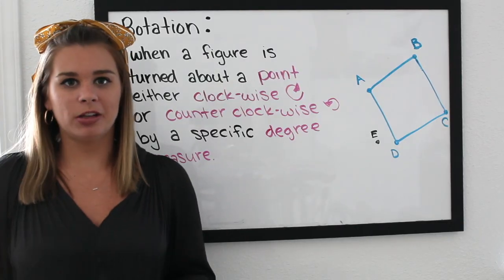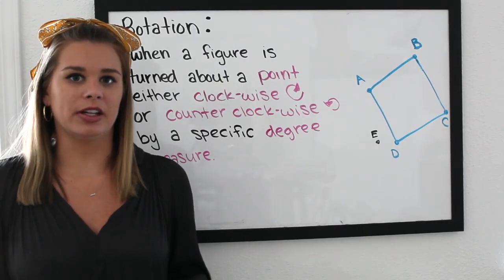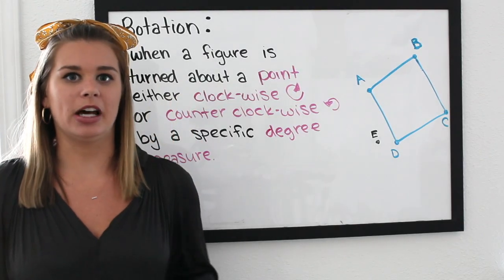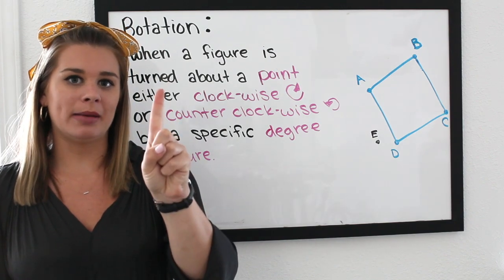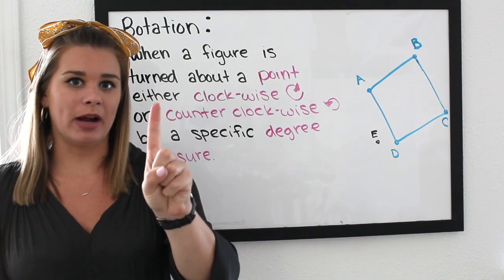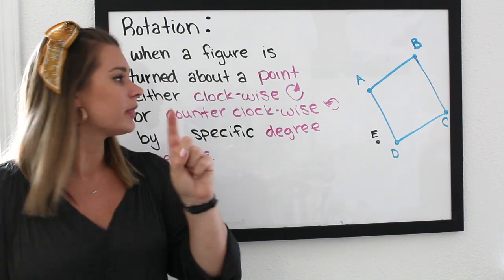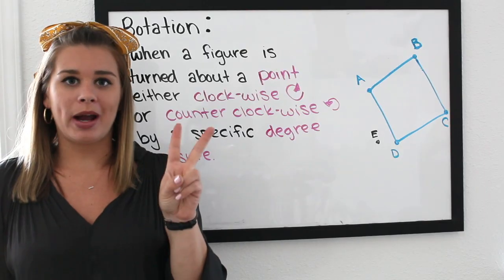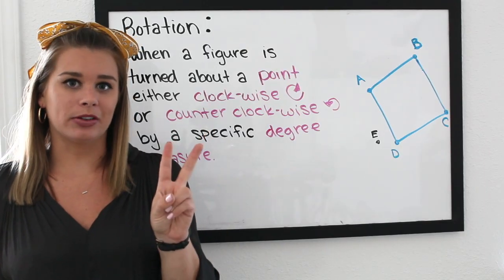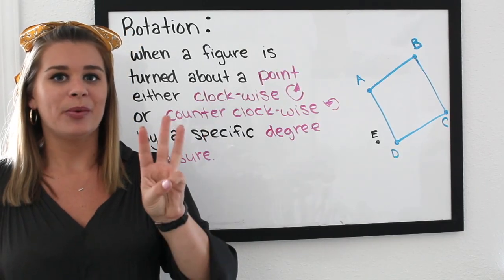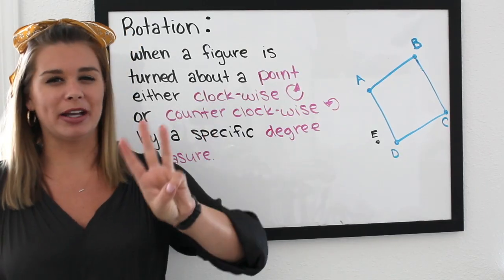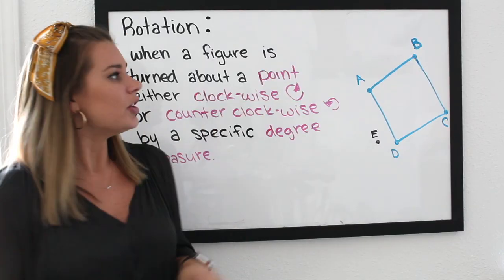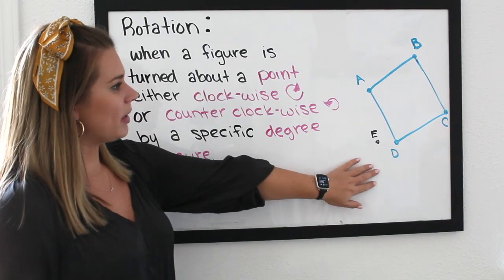So if you want to tell me to rotate a figure, there are three things you need to tell me: which point am I rotating around, am I going clockwise or counterclockwise, and how far am I going — by what degree?